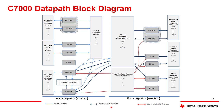The video opens with the C7000 datapath block diagram. There's a lot to see here — this doesn't represent every single detail of the datapath, just the main ones worth talking about as an introduction. We will come back to this diagram later after we've fleshed some of these concepts out.